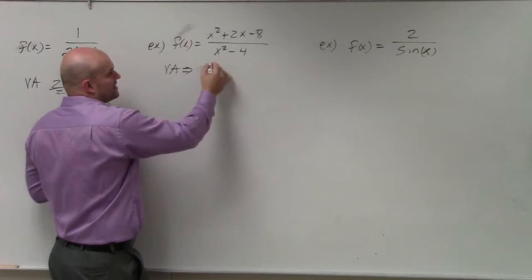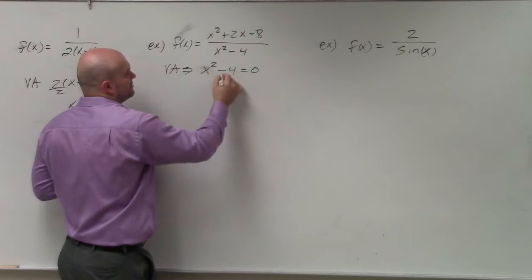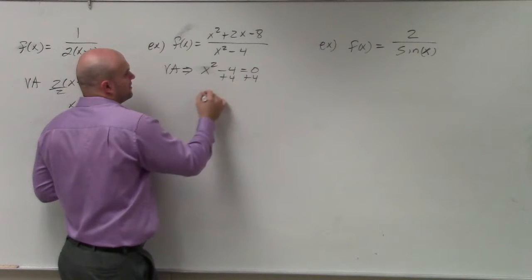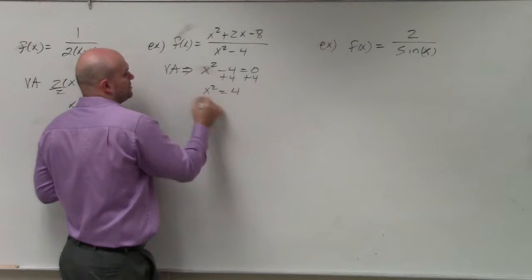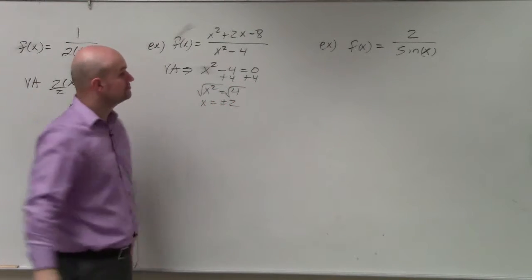So, I'll say 4x squared minus 4 equals zero. Add 4, add 4. x squared equals 4. Square root, square root. x equals plus or minus 2. All right.